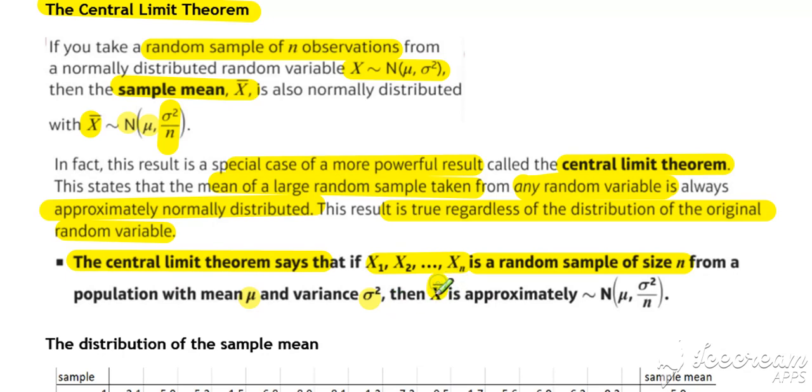then x bar, the distribution of x bar, will approximate to a normal distribution with the same mean and a variance reduced by the factor of n.